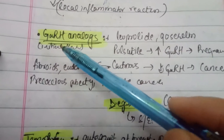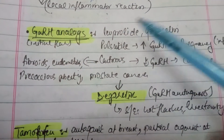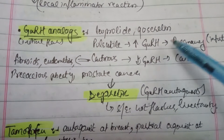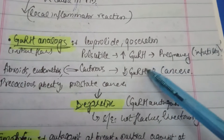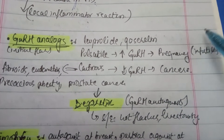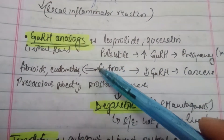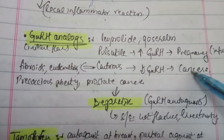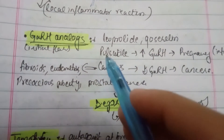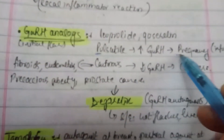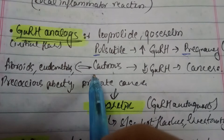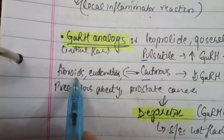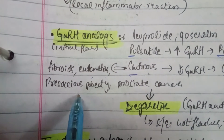GnRH analogs — examples are leuprolide and goserelin. If used in a pulsatile manner, they increase GnRH, help with ovulation, and are used for infertility treatment. If given continuously, there is an initial flare-up followed by reduction of GnRH. Mnemonic: P for pulsatile = pregnancy; C for continuous = cancer. Continuous use treats endometriosis, fibroids, prostate cancer, and precocious puberty.